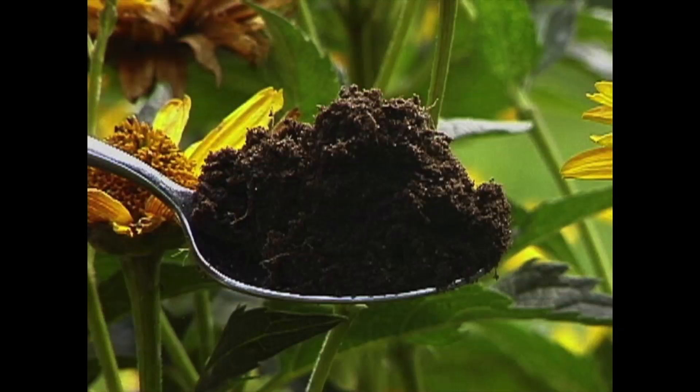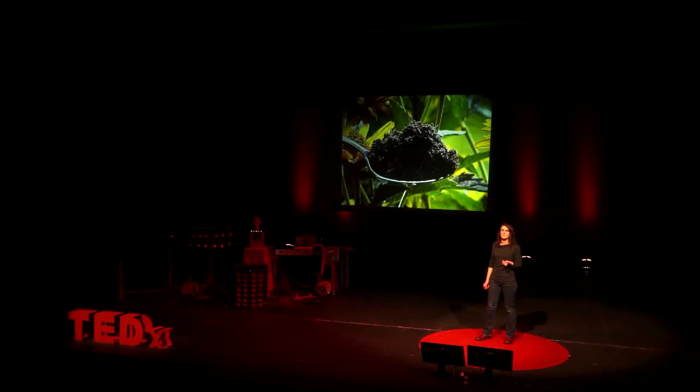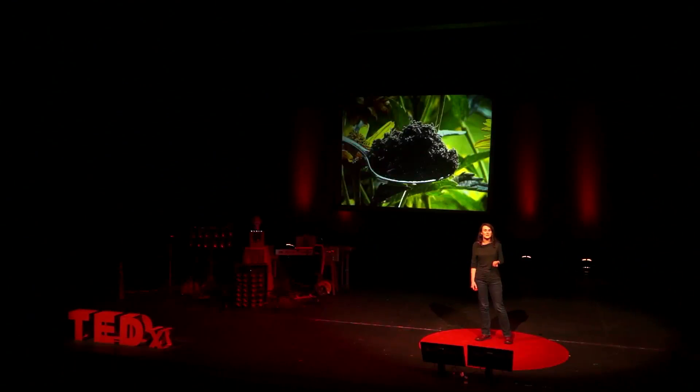Bacteria and other microorganisms are crucial players in all terrestrial and aquatic ecosystems — those we rely on for our survival. And soil is a great example of this. In just one teaspoon of soil, you're likely to find more individual bacteria than there are human beings on Earth, and there are debates raging about species diversity in soil. Estimates range from 100,000 species per gram to 16 million species per gram.